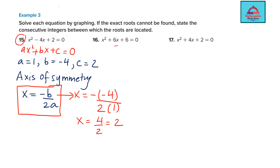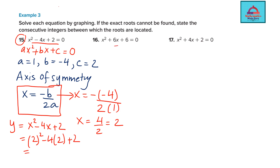Now with x = 2, find y by substituting into the equation: y = x² - 4x + 2 = (2)² - 4(2) + 2 = 4 - 8 + 2 = -2. So the vertex is at the point (2, -2).